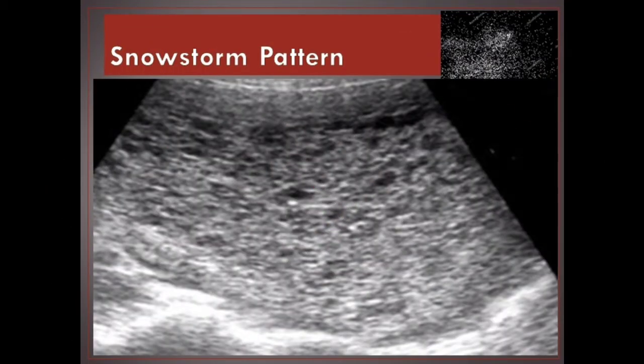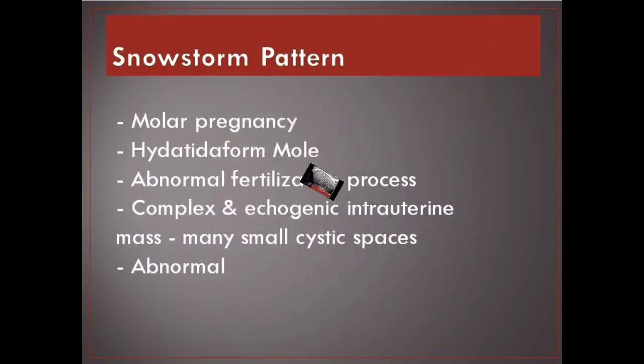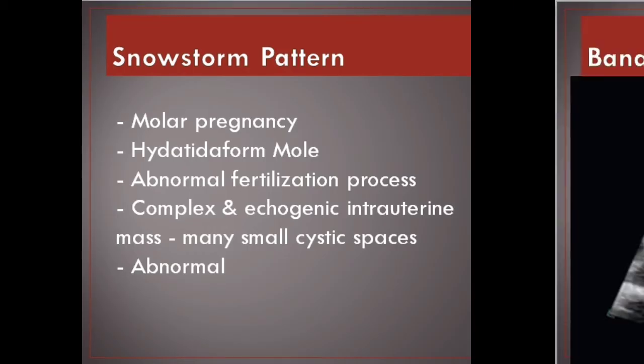Snowstorm pattern. Molar pregnancy — abnormal fertilization process presenting as a complex and echogenic intrauterine mass with many small cystic spaces. Abnormal.